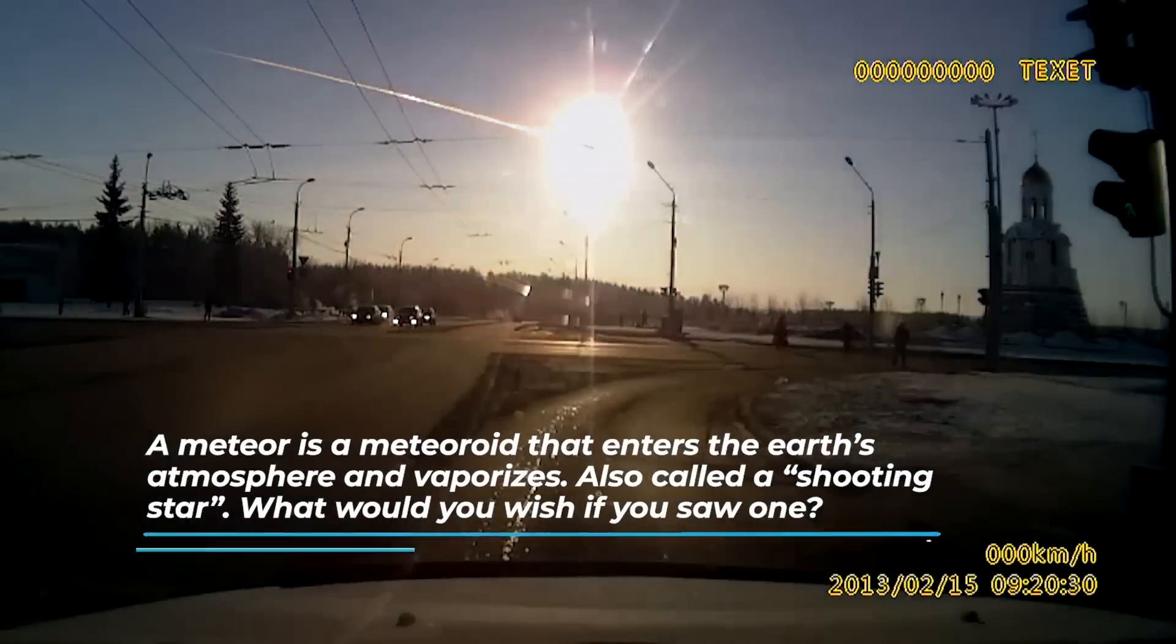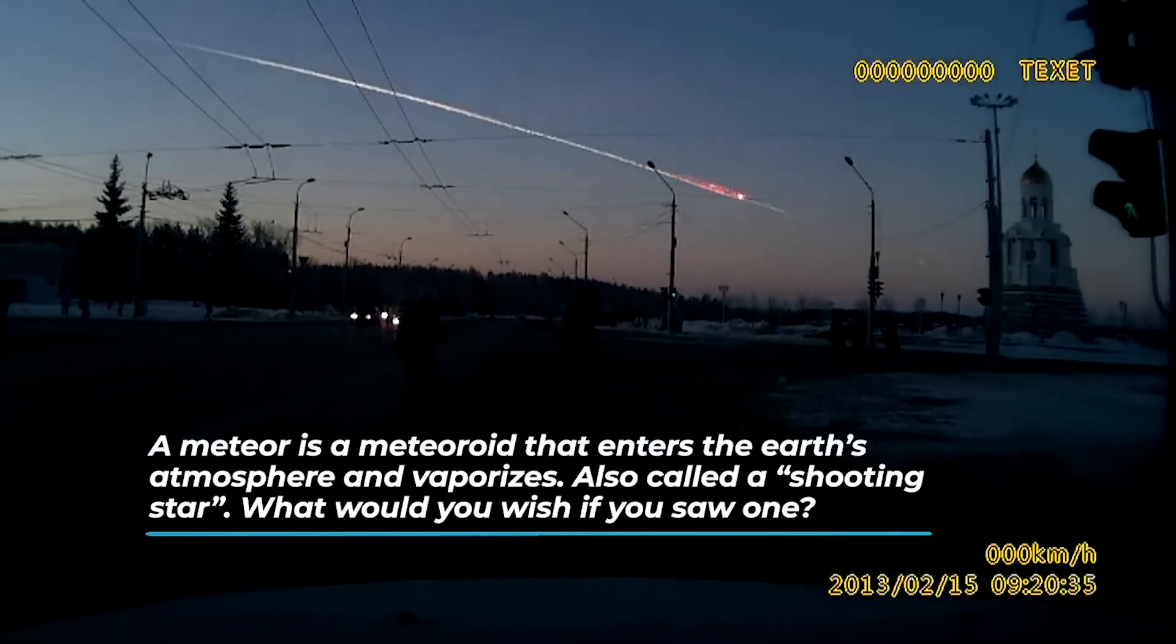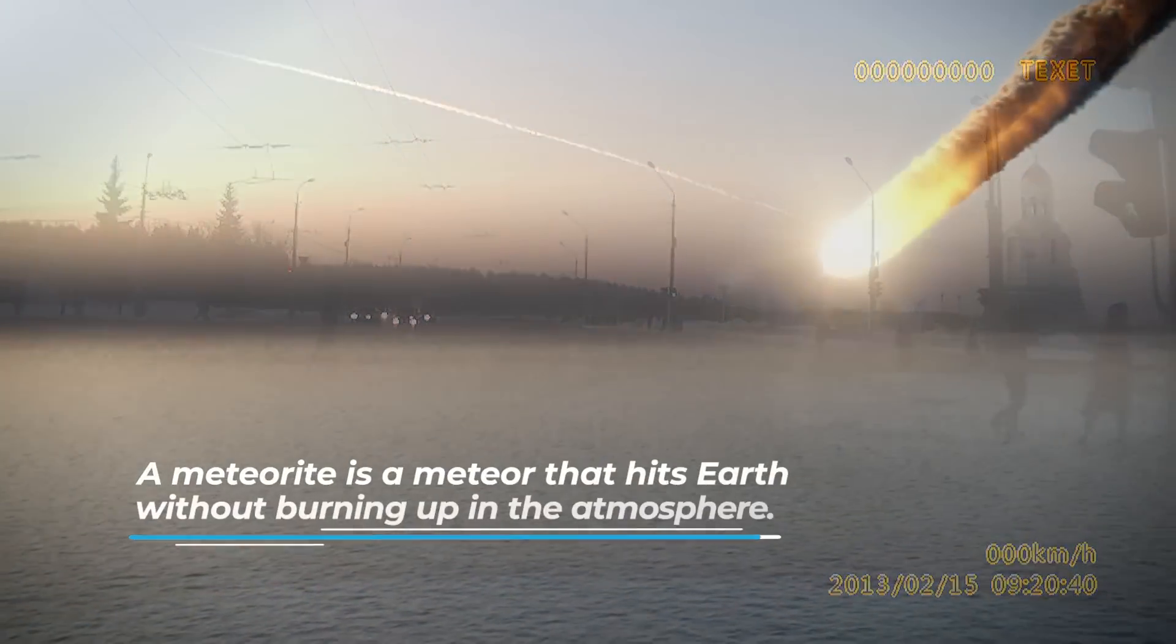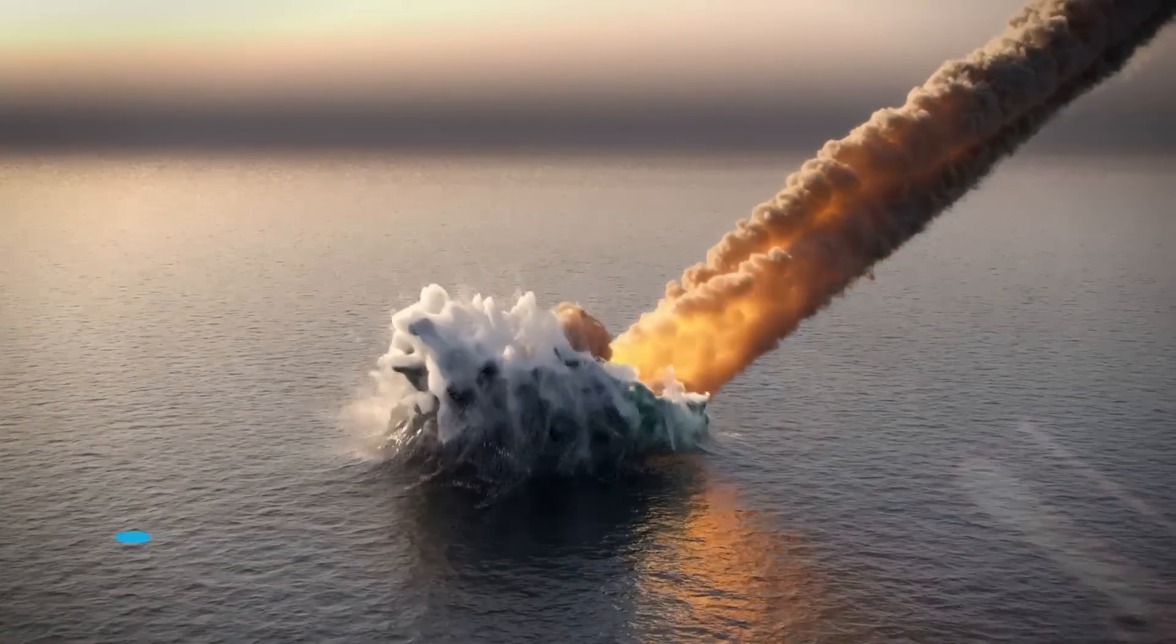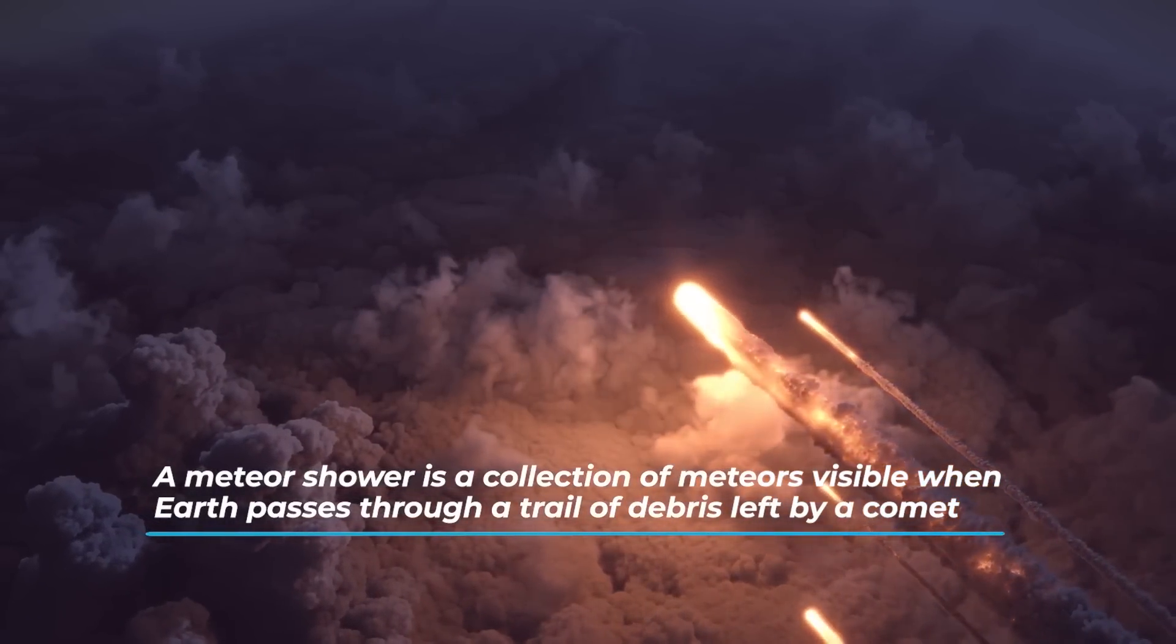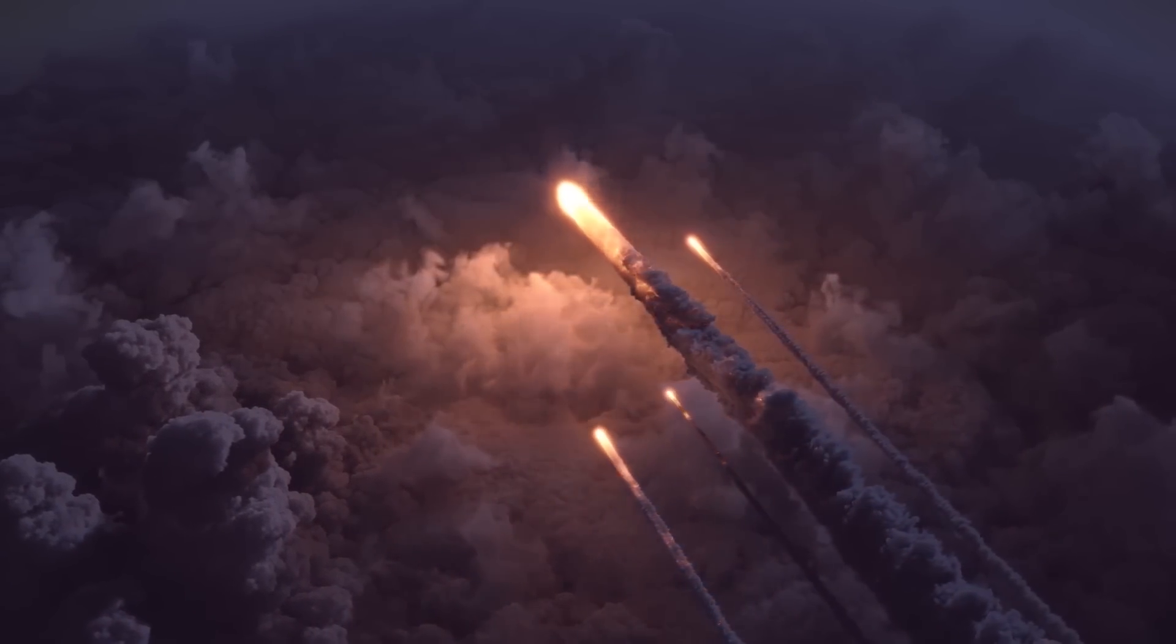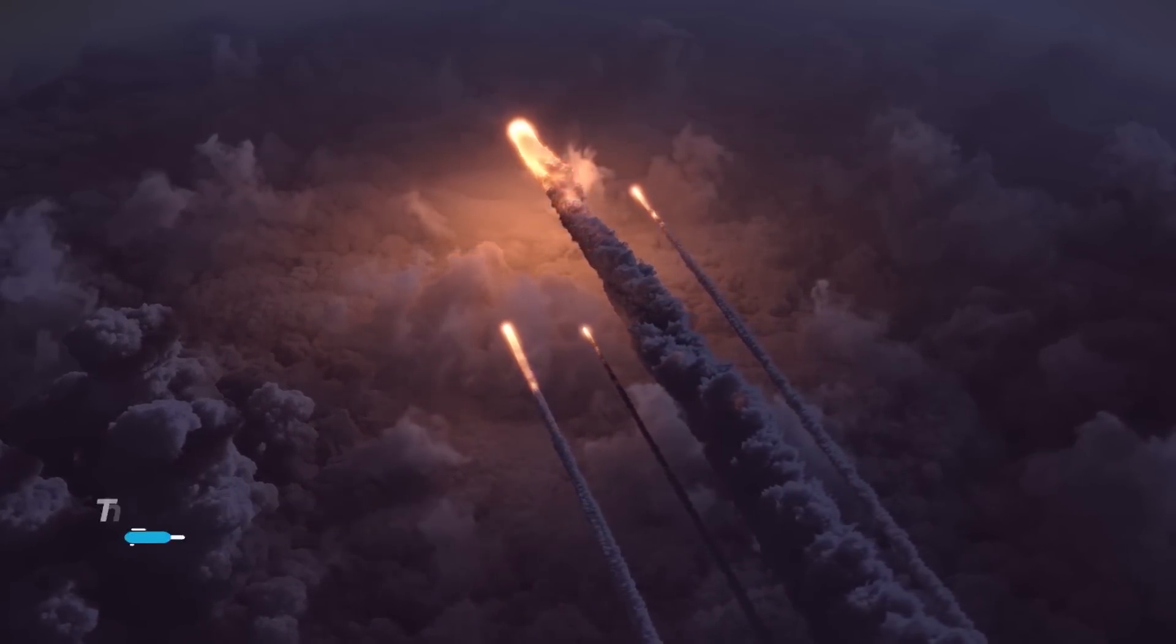A meteor is a meteoroid that enters the Earth's atmosphere and vaporizes, also called a shooting star. What would you wish if you saw one? A meteorite is a meteor that hits Earth without burning up in the atmosphere. A meteor shower is a collection of meteors visible when Earth passes through a trail of debris left by a comet. This is what you usually see in the sky in certain periods of the year. For example, the Perseids meteor shower in August.